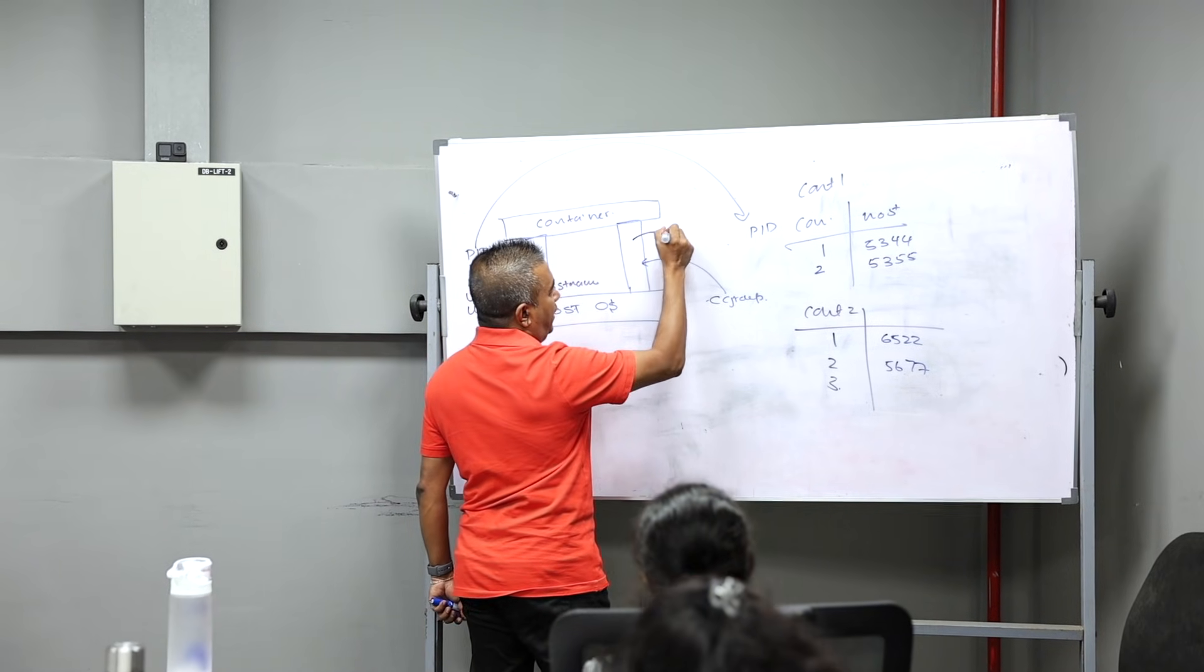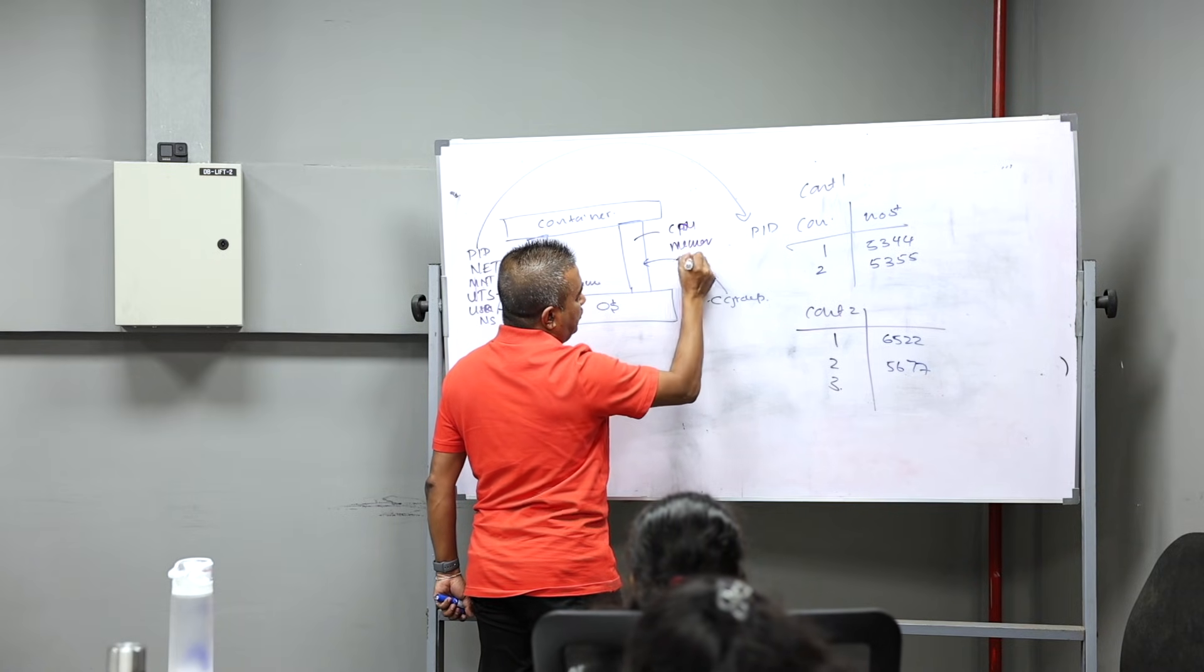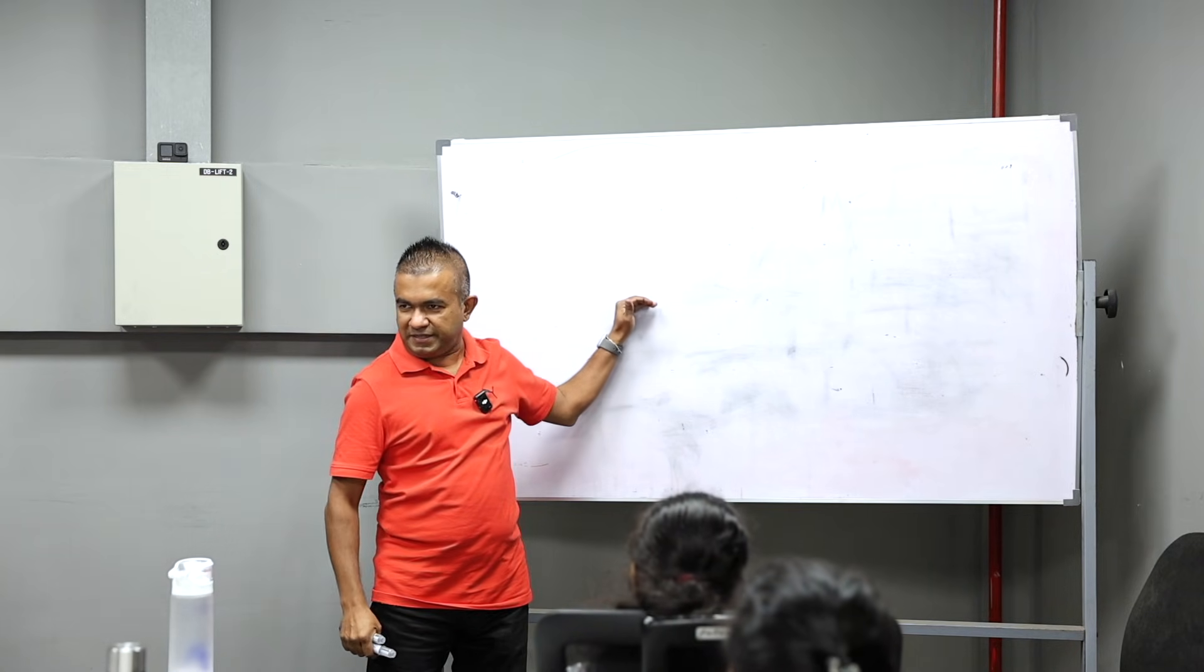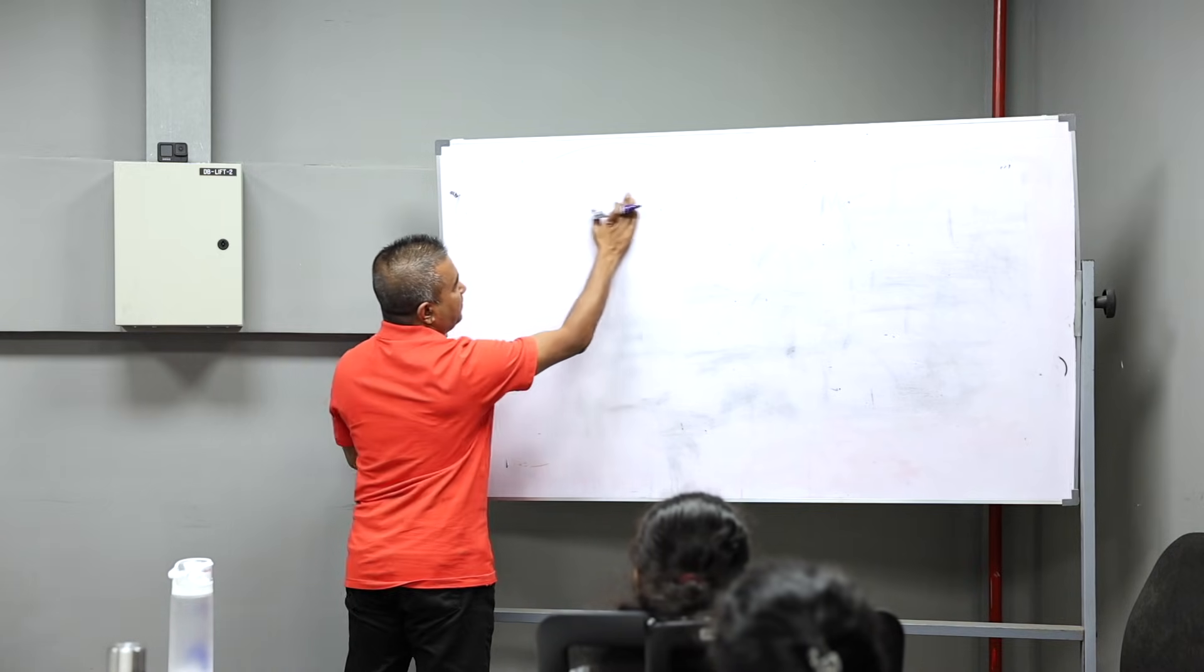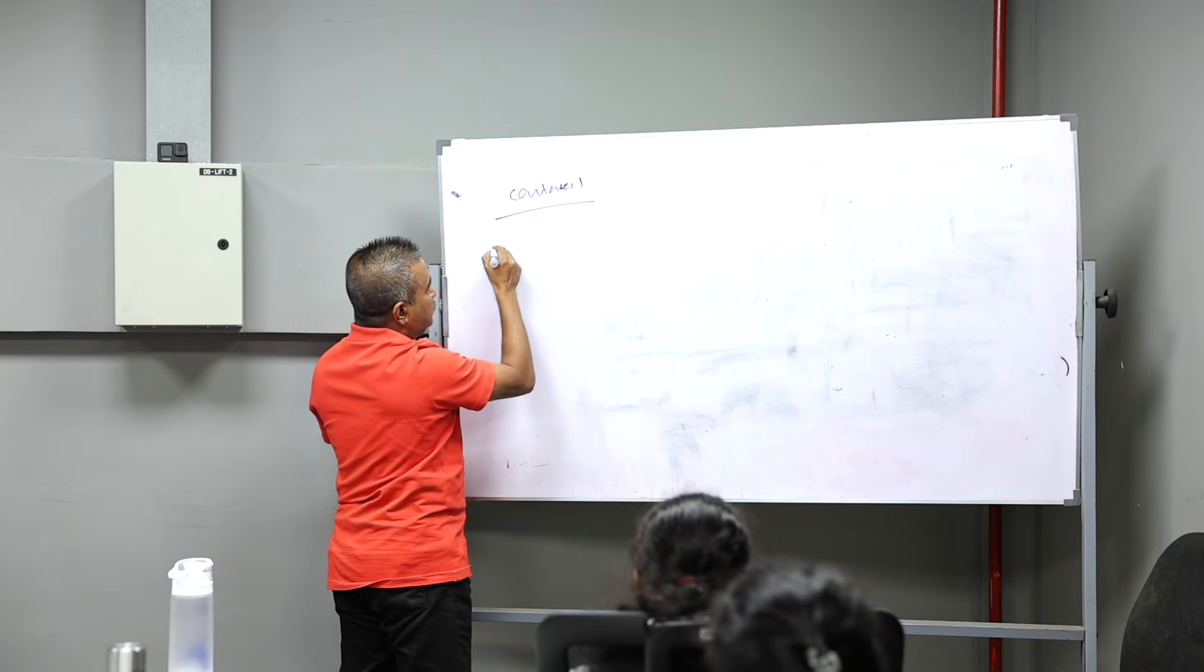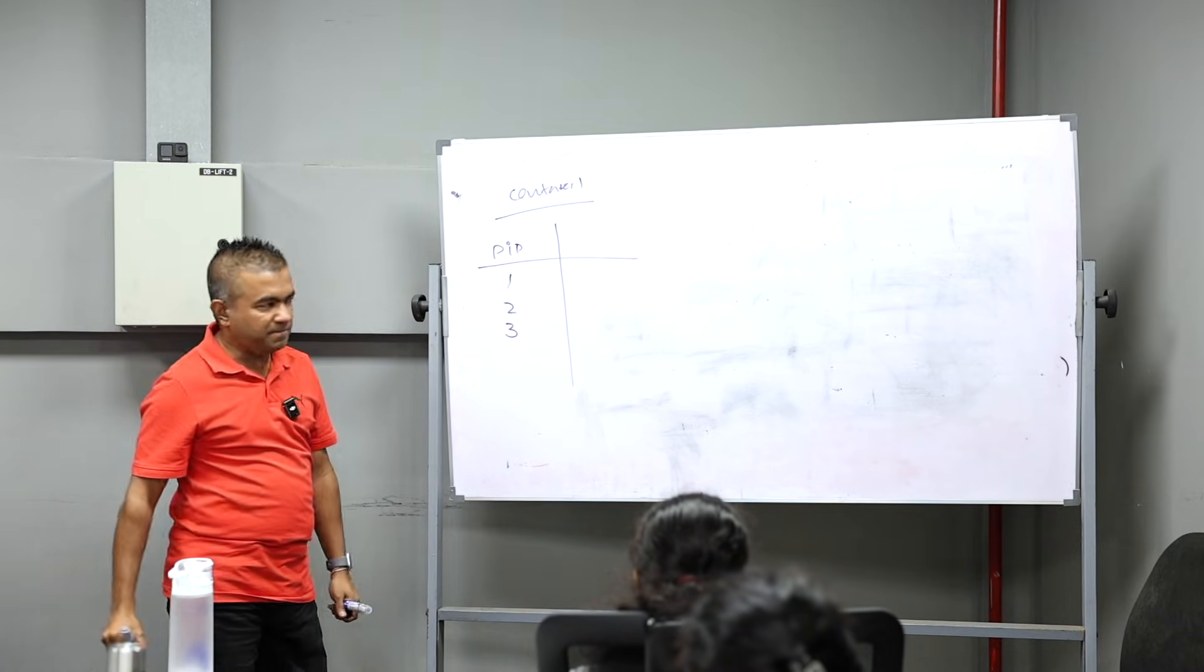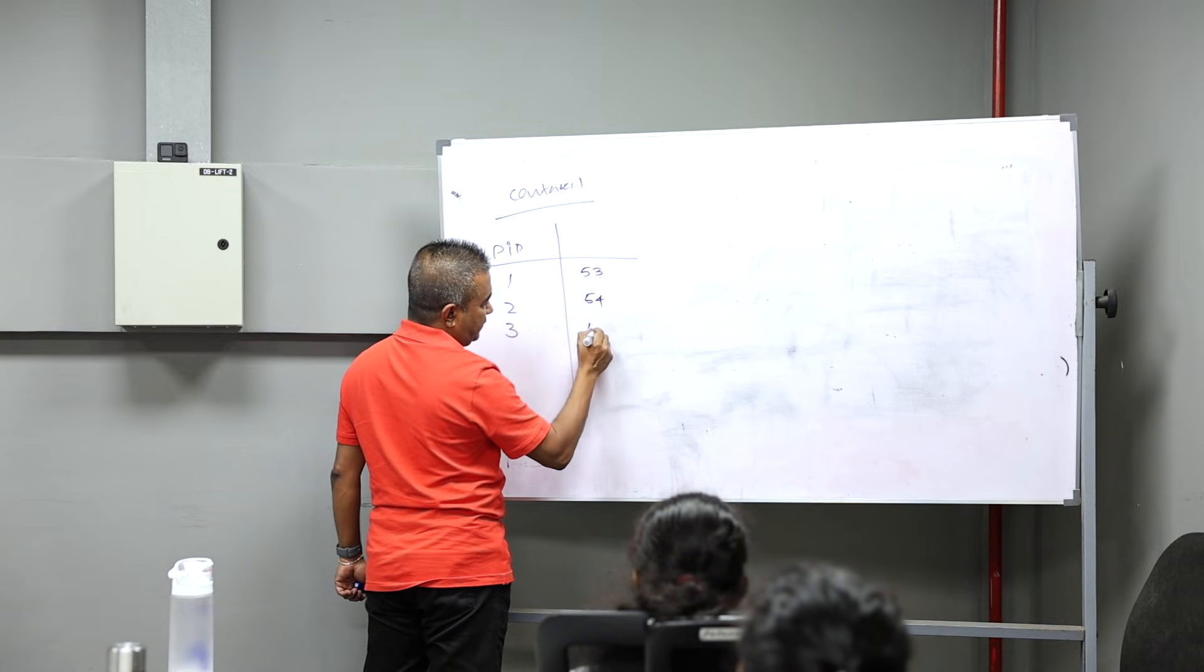In cgroups you have CPU, memory, I/O, PID, so you can define how many processes this can create. Now we create processes inside the container. So you have container 1, you have PID 1, 2, 3. This has 53, 54, 55.